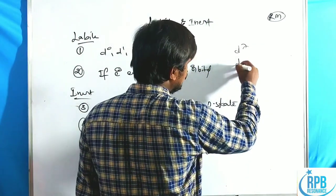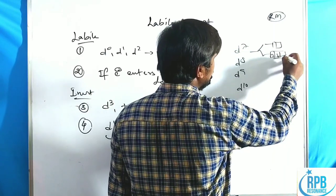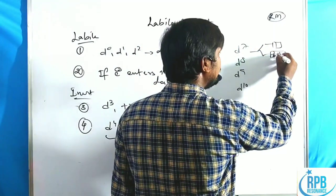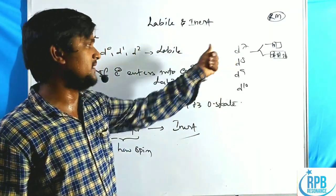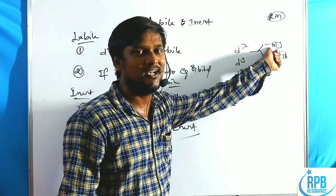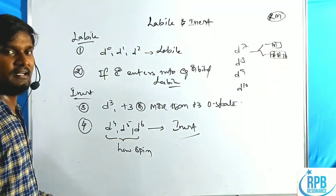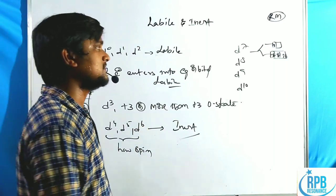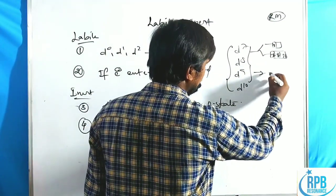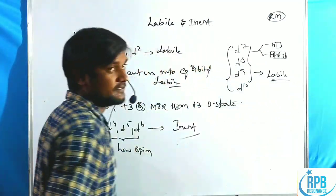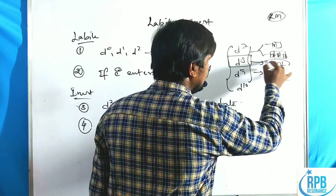What about the remaining configurations: D7, D8, D9, D10? For D7, even in strong field, the seventh electron definitely jumps to the Eg level. If any electron enters the Eg level, then it is a labile complex. D7 has one electron in the Eg level, D8 has two electrons, D9 has three electrons, D10 has four electrons — even with strong or weak field. So all are having Eg electrons, therefore all are labile complexes. But exceptionally, D8 configurations are inert — this is an exception.